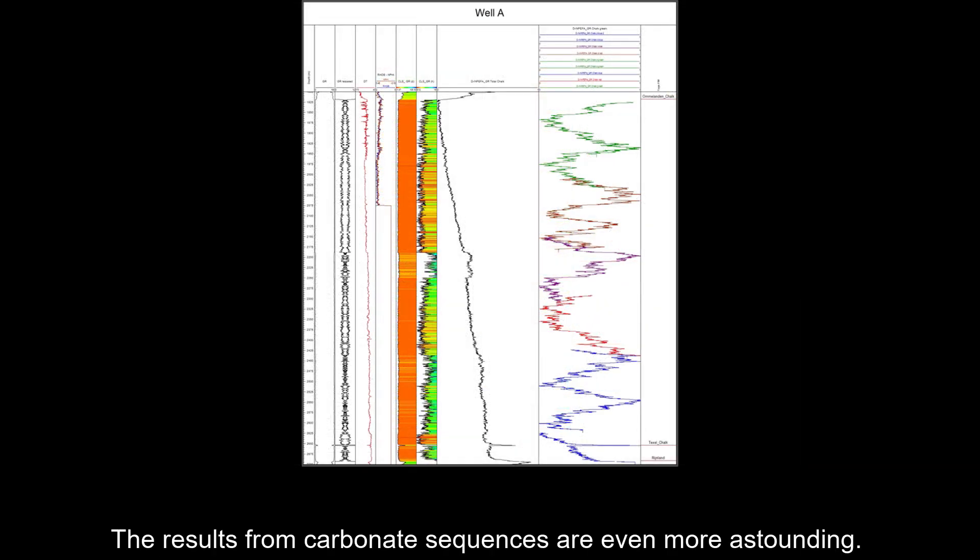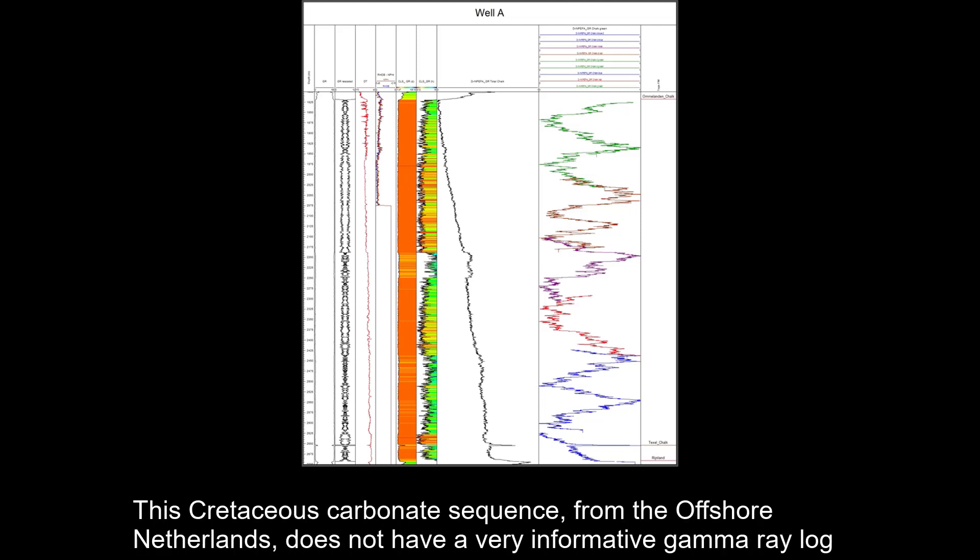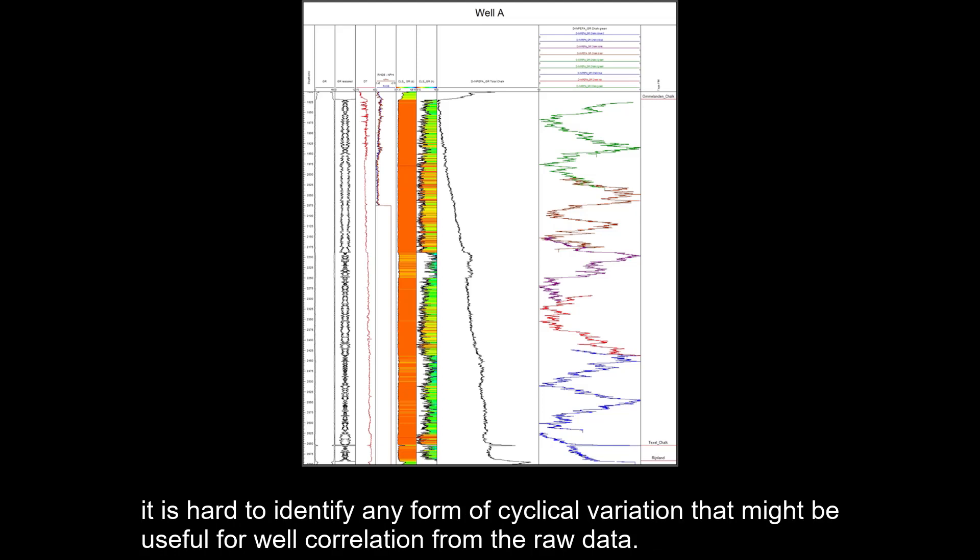The results from carbonate sequences are even more astounding. This Cretaceous carbonate sequence from the offshore Netherlands does not have a very informative gamma ray log. It is hard to identify any form of cyclical variation that might be useful for well correlation from the raw data.